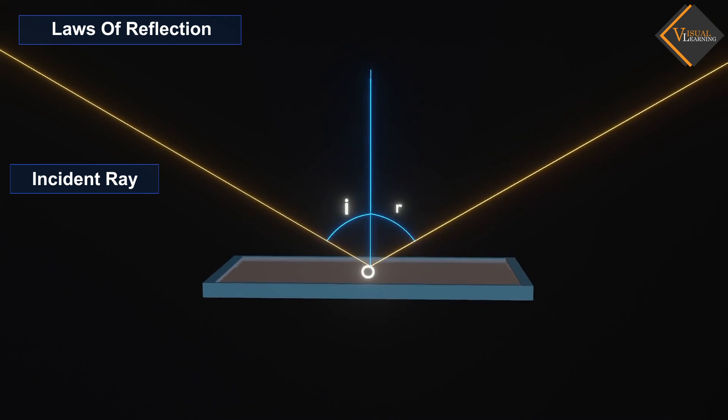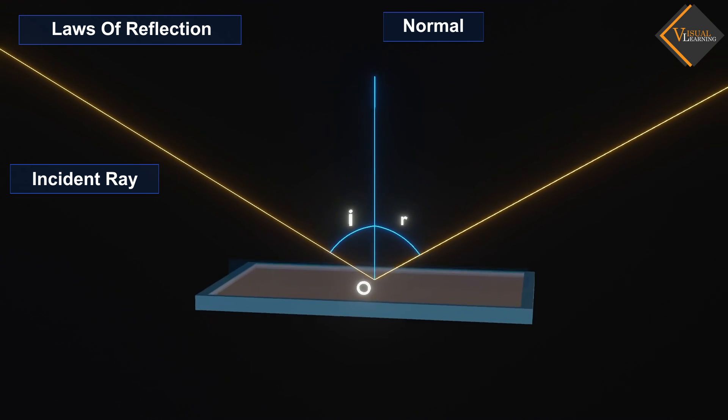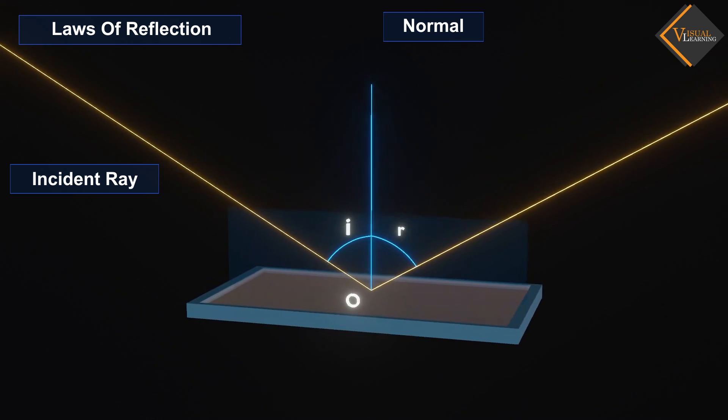The incident ray, the normal to the mirror at the point of incidence, and the reflected ray all lie in the same plane.